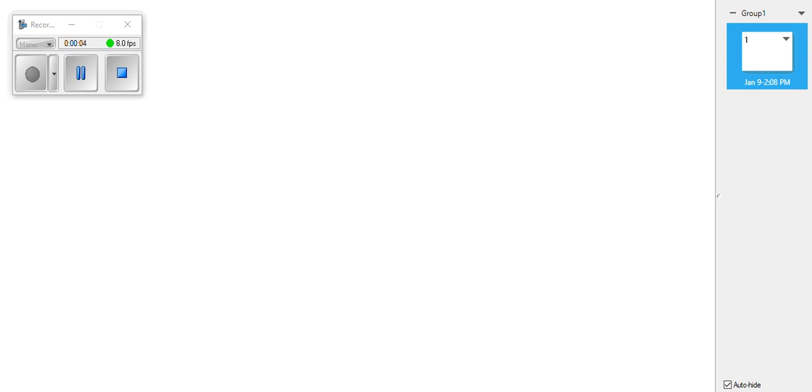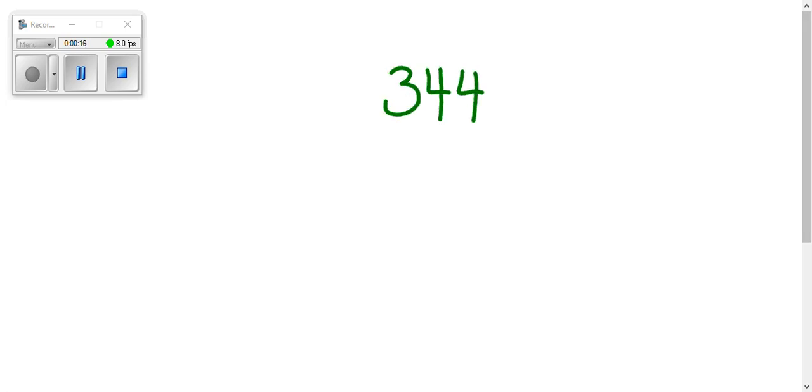Okay families, I'm going to show you our partial quotient or decomposing strategy for division. So let's say you had 344 divided by 5. Some people call this the magic seven, we're trying to not use those words.